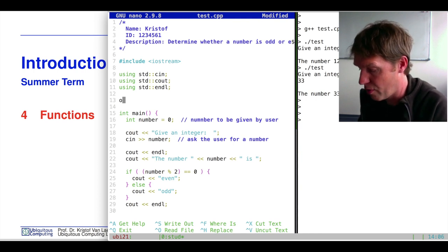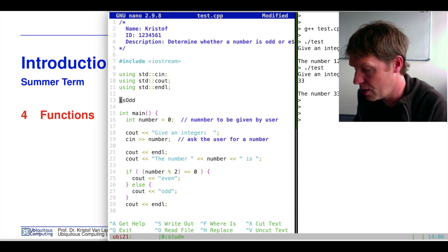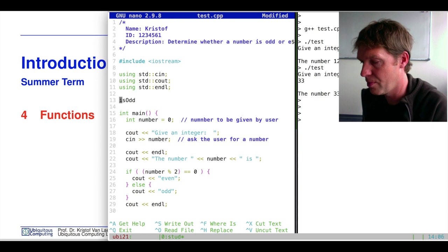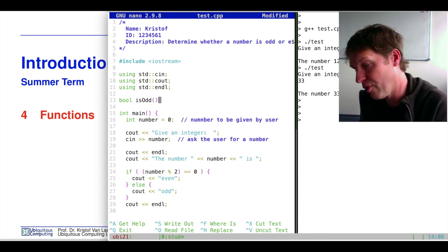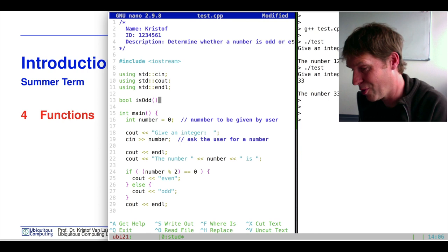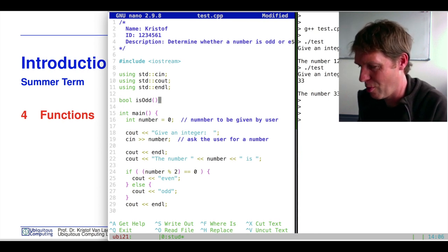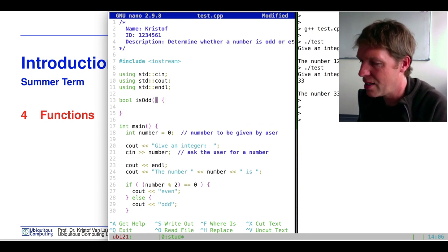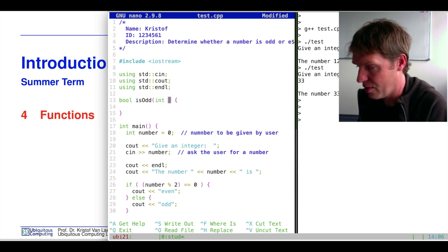We can say we want to have a function called isOdd, and this returns a Boolean true if the number that we're going to supply as a parameter is odd and false if it's not odd, therefore even. So we define our function just like we define our main function. Our function isOdd needs to be supplied with a parameter, we give it an integer and we call this num.